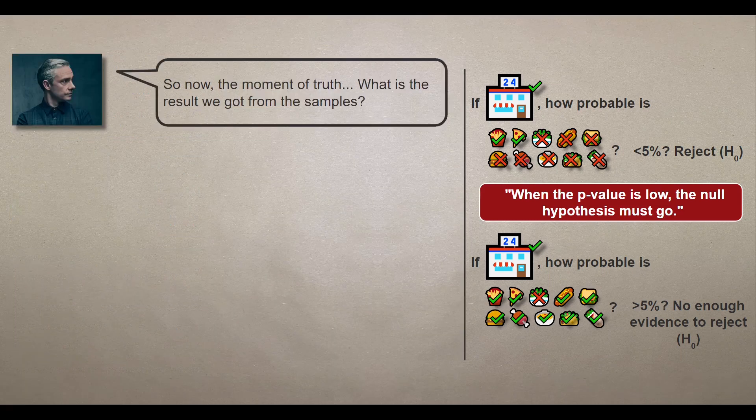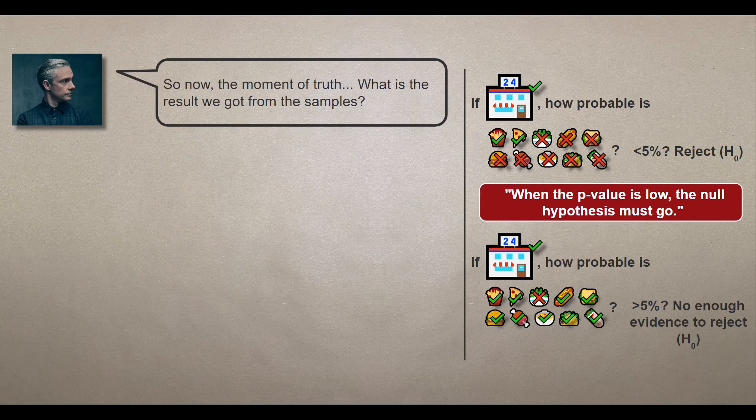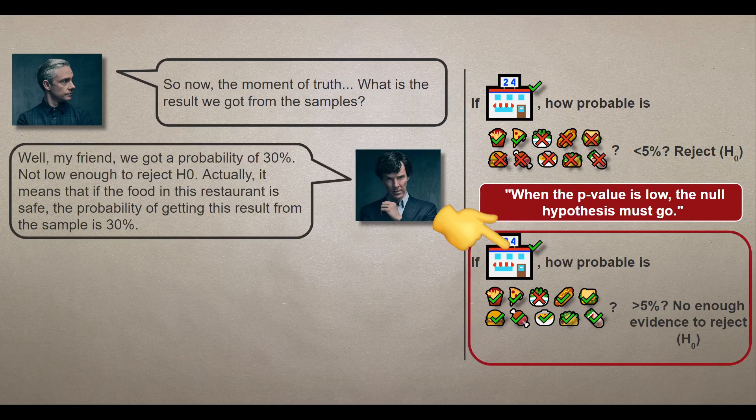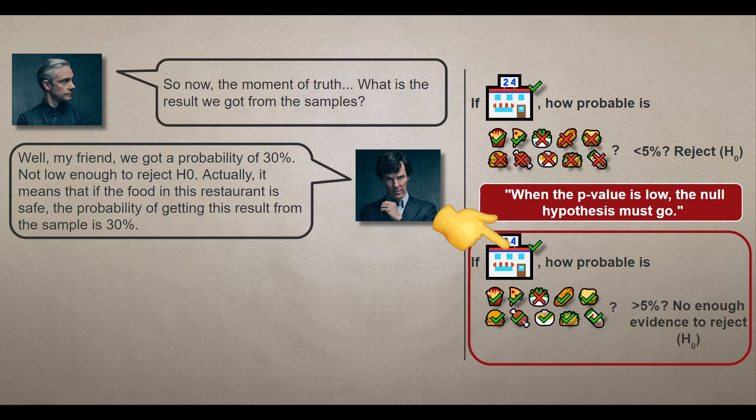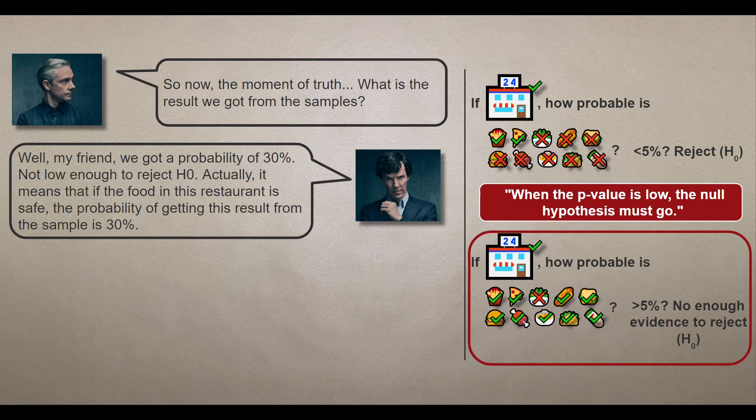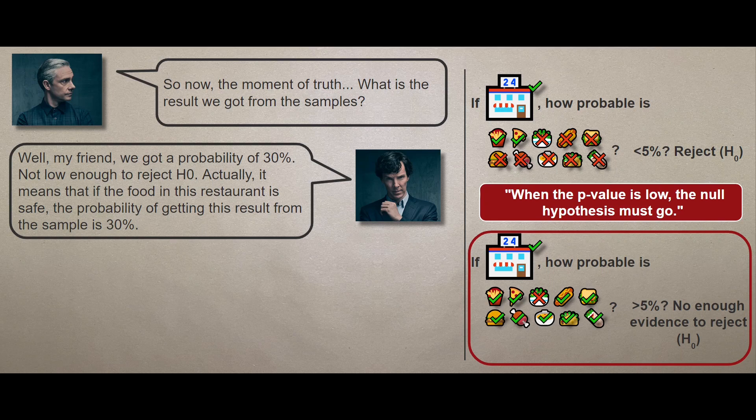So, now the moment of truth. What is the result we got from the samples? Well, my friend, we got a probability of 30%. Not low enough to reject the null hypothesis I'm afraid. Actually, it means that if the food in this restaurant is safe, the probability of getting this result from the sample is 30%. As I mentioned before, this 30% is a result of dedicated statistical tests that are out of the scope of this video. If you are interested in such statistical tests, please leave a comment with your favorite statistical tests so I cover it in the next video.